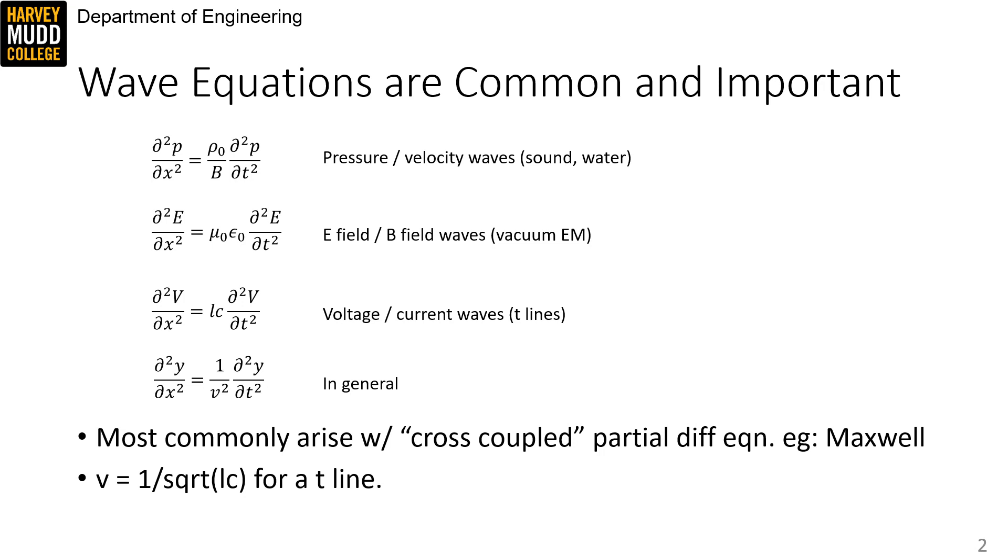You'll notice that all of the example wave equations I've included have the form shown on the general line of this slide. They're comprised of a second derivative with respect to space on the left, a second derivative with respect to time on the right, and a proportionality constant. The proportionality constant is called 1 over v squared in the general case, and we'll talk more about v later, but note that it's equal to 1 over the square root of LC for a transmission line.